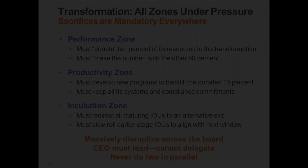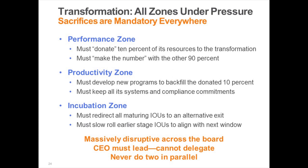In the performance zone, I want to take this disruptive innovation from one or two percent of total revenue to 10 percent. I need 10 percent of the sales force to do that — and in truth, because it's an inefficient sales motion, I probably need 15 percent. I have an overlay sales force, but that's getting expensive. All of a sudden my contribution margins, my book to bill, and all my operating expenses look crazy. There's enormous pressure on the performance zone: can I make my number and do this? The productivity zone is getting the same heat, and now it has to step up its capability with much more program support to go into the transformation zone.